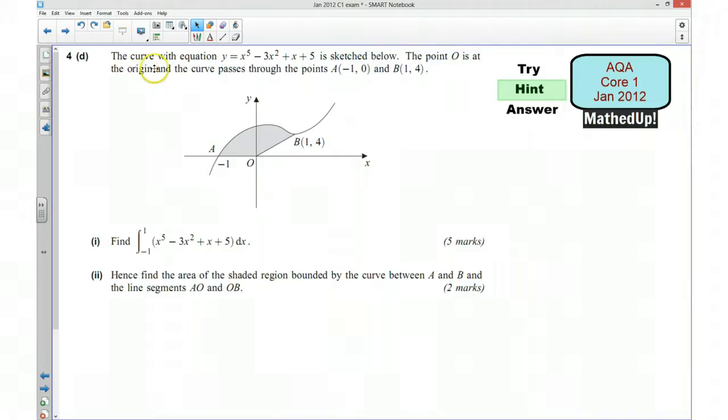We're told that we've got this curve again, which is shown in this sketch, and the curve passes through the point (-1, 0) and (1, 4). The first part of this question we want to find this definite integral because we're given limits.